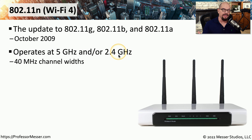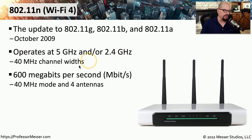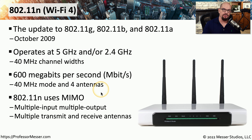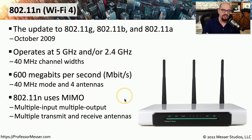With 802.11n we also have more bandwidth available for each individual channel — up to 40 megahertz channel widths — which means we can transfer much more data at the same time. If your wireless access point supports 40 megahertz channel widths and has four antennas, you can get a maximum theoretical throughput of 600 megabits per second from 802.11n. This standard also introduced a new form of communication called MIMO, or Multiple Input, Multiple Output, which means devices can transfer much more information simultaneously between the station and the access point.